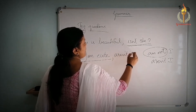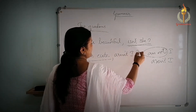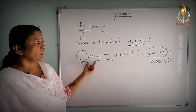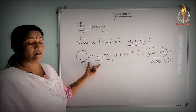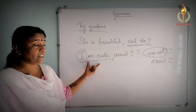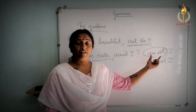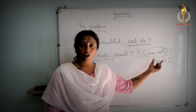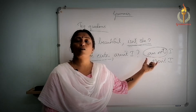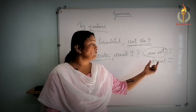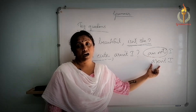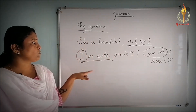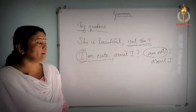So 'am not' does not have a contracted form. Instead of that, we use 'aren't.' So: 'I am cute, aren't I?' That is how it works for sentences using 'am.'